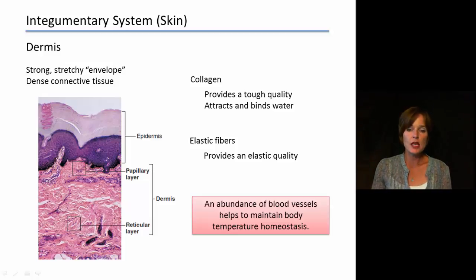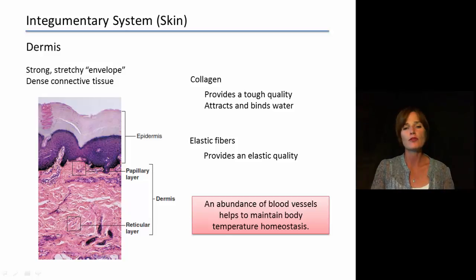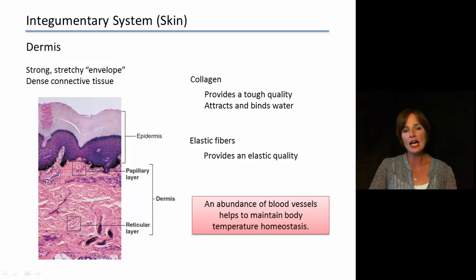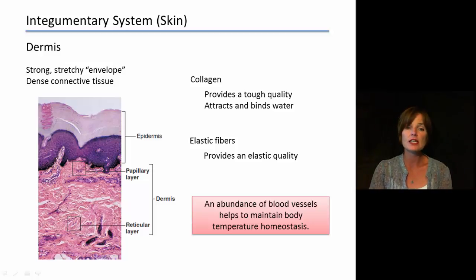When talking about the dermis, there is an abundance of blood vessels there. Having a lot of blood vessels close to the exterior of our body is really helpful for temperature homeostasis. If we are overheated, the skin gets really flushed or pink and red — that is a dilation of the capillaries near the surface, allowing more blood to flow close to the skin surface and releasing heat from our body. Conversely, if it is very cold outside, those capillaries constrict, lowering the amount of blood flowing close to the skin surface and helping us retain heat. The presence of blood vessels in the dermis is really important for the temperature homeostasis we have to constantly maintain.